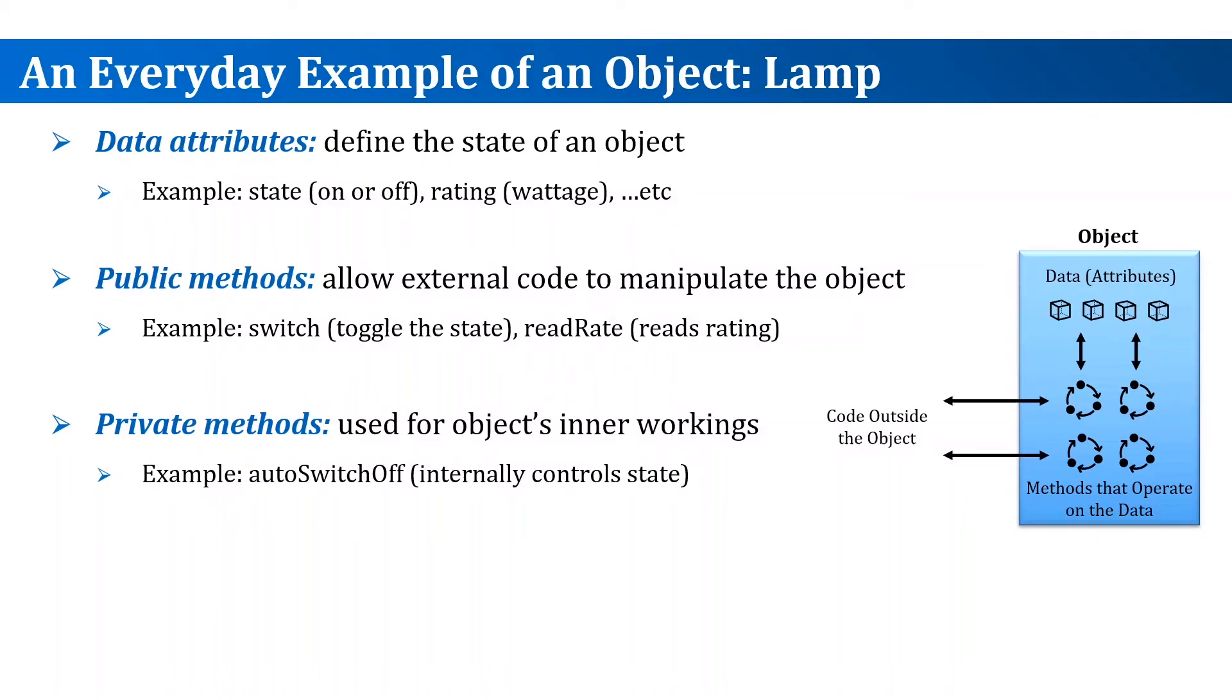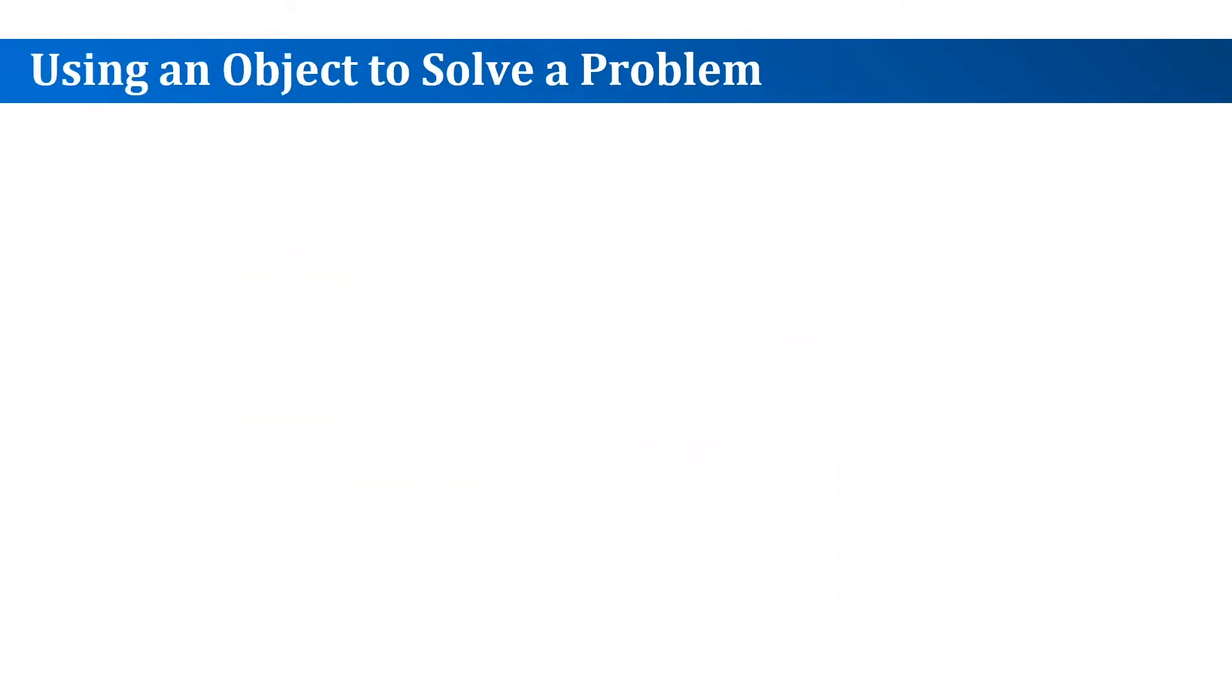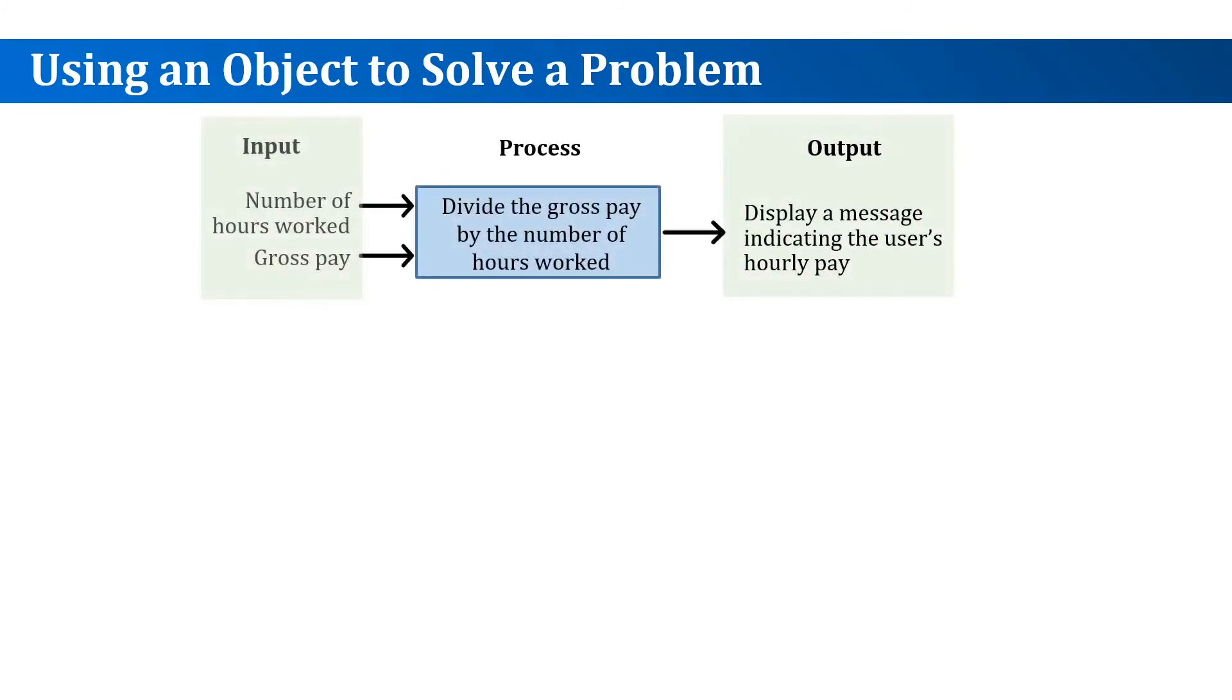We define the attributes and methods of each object and then make the methods of these objects interact with each other to solve the problem. Let's take a simple example. What if we want to have an OOP-based solution for the calculation of the user's hourly pay given their number of hours worked and their gross pay?